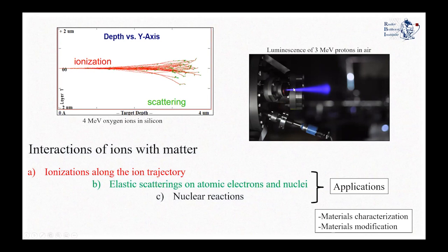On the right side of this presentation, you can see a 3 MeV proton beam released in air. One can see the trajectory of the ions and also the angular spreading of ions due to scattering. We can also see the beam itself, which is a result of luminescence of mostly nitrogen in air — a secondary effect of the ionization of air along this trajectory.